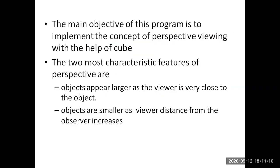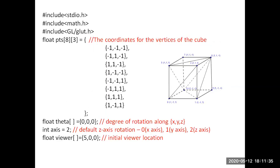The main objective here is to implement the concept of perspective viewing with the help of a cube. The two important characteristic features of perspective viewing to be observed are: objects appear larger as the viewer is very close to the object, and objects appear smaller as the viewer's distance from the object increases. Let us understand how perspective viewing is implemented in the program.